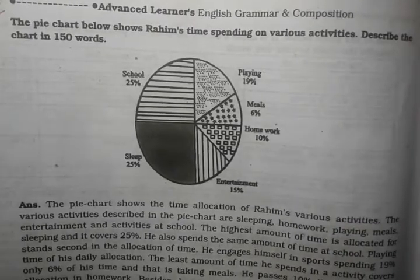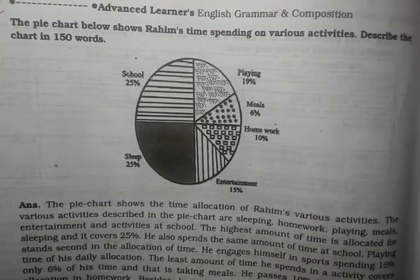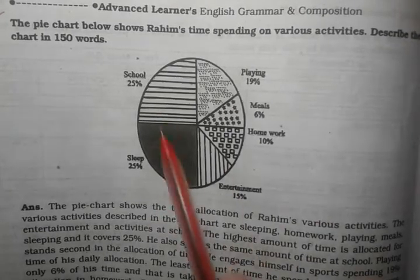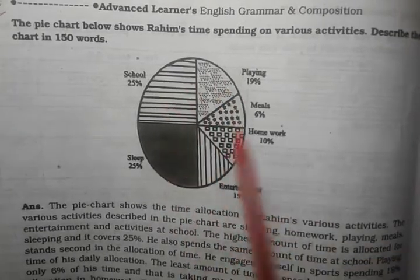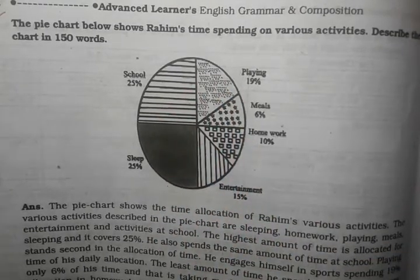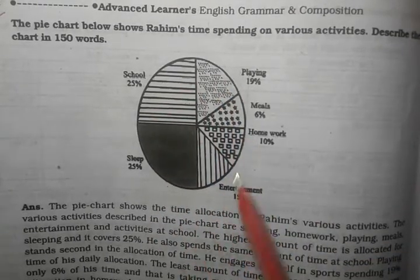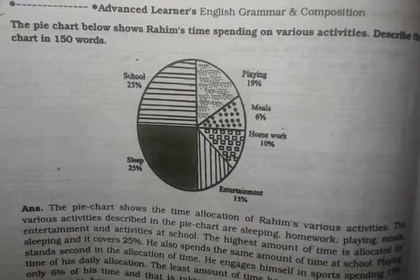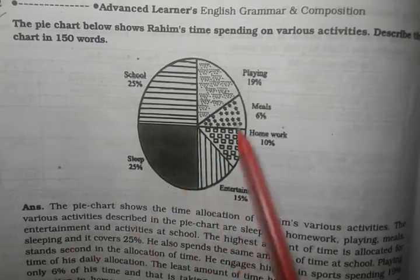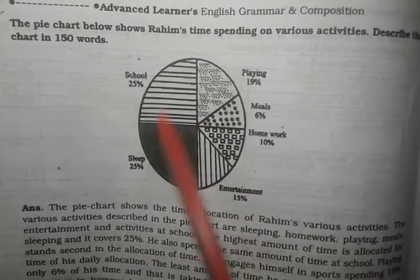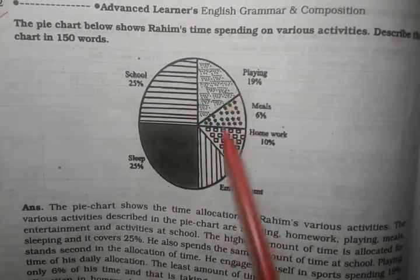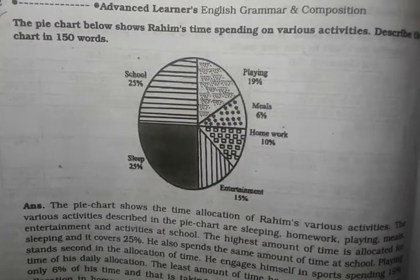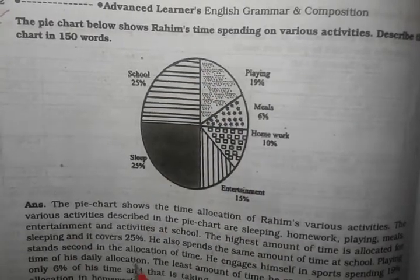This is a pie chart. A pie chart represents 360 degrees and covers 100 percent. So what is a graph and chart, and why is it important?